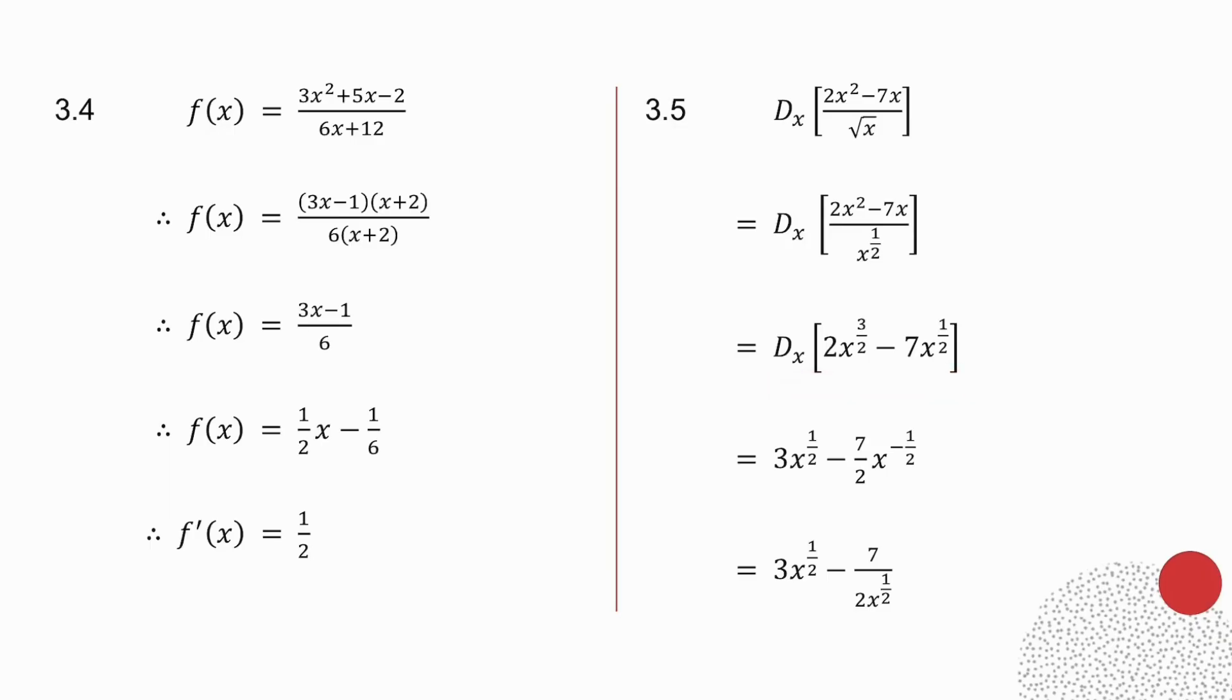Now I take the derivative, and you notice the Dx has gone. 3 over 2 times 2 is 3x to the half. A half times minus 7 is minus 7 over 2x to the minus a half. And then I bring the x to the minus a half to the bottom of the fraction.